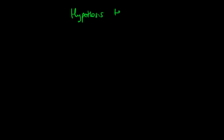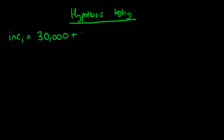In this video we're continuing to talk about hypothesis testing in the context of linear regression. Last time we had our sample of data and we estimated that an individual's level of income was equal to 30,000 US dollars plus 0.1 times the parental income. We were basically trying to understand whether this 0.1 came about as a result of picking a weird sample, or whether it actually was the case in the population that parental income does affect an individual's level of income.